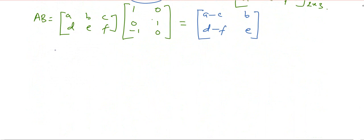Now we can write it like this: [a-c, b; d-f, e] is equal to the matrix which is given to us, which is nothing but [0, 0; -1, 2].